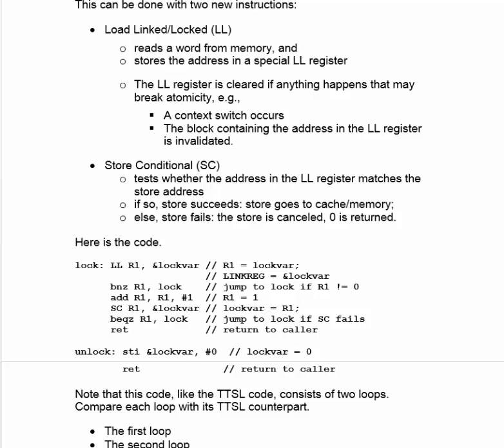The code has a double loop just like the code for TTSL did. In the first loop, we're waiting for R1 to become 0 so we can enter the lock. We load lockvar into R1 and check to see if it's 0. If it is 0, we can go through; otherwise, we branch back to the top of the loop. Then if it was 0, we come through and can set the lock. We do this by adding 1 to R1 — R1 was 0, so this makes R1 become 1. The reason we do the add is because we have to generate a 1 somehow. With test-and-set we would simply read a value in memory, but now we actually have to store 1 back into memory, so we generate it using the add instruction.